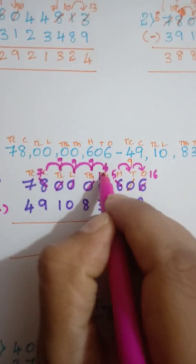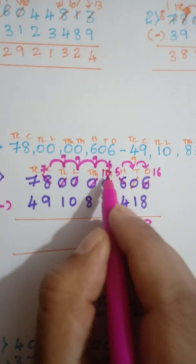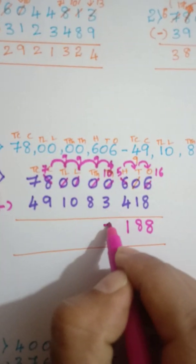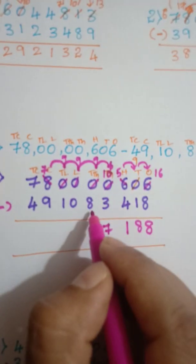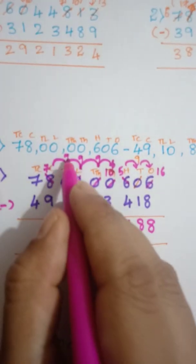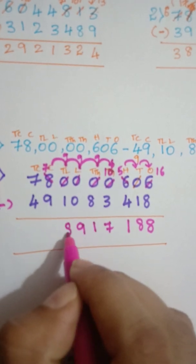So let me write clearly. It is ten. So ten minus three. How much? Seven. Nine minus eight. How much? One. Nine. Here nine minus one is eight. Eight.